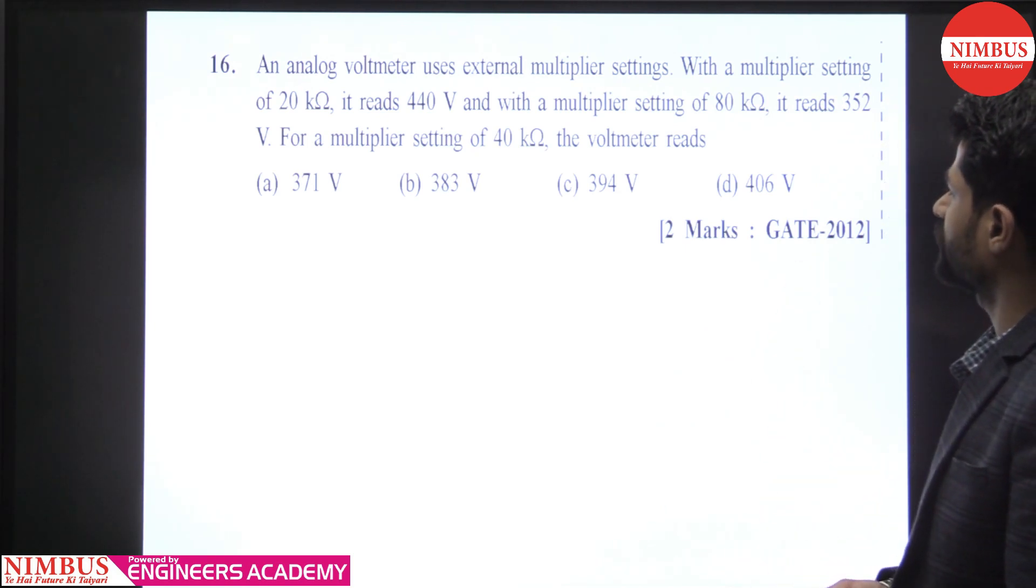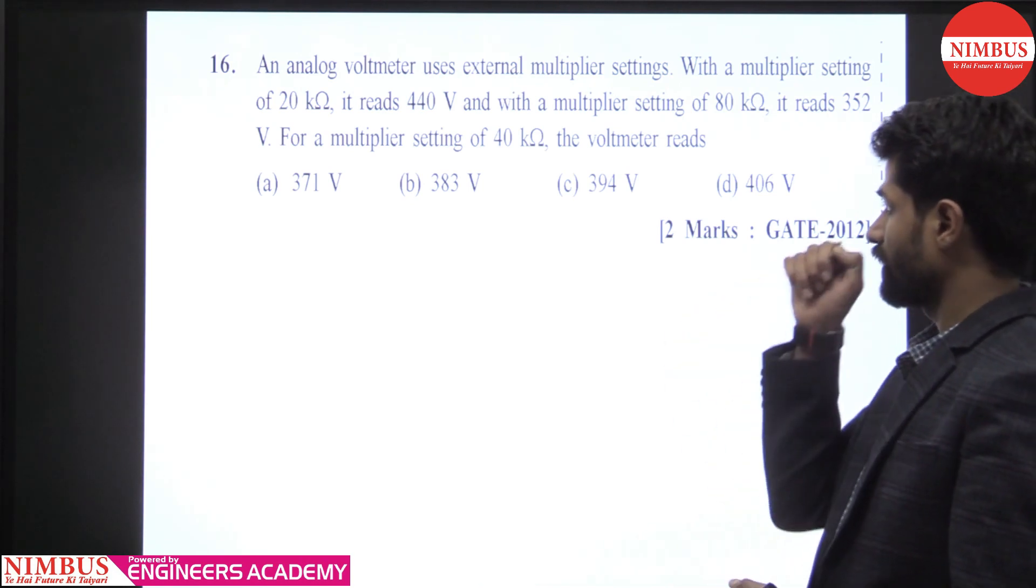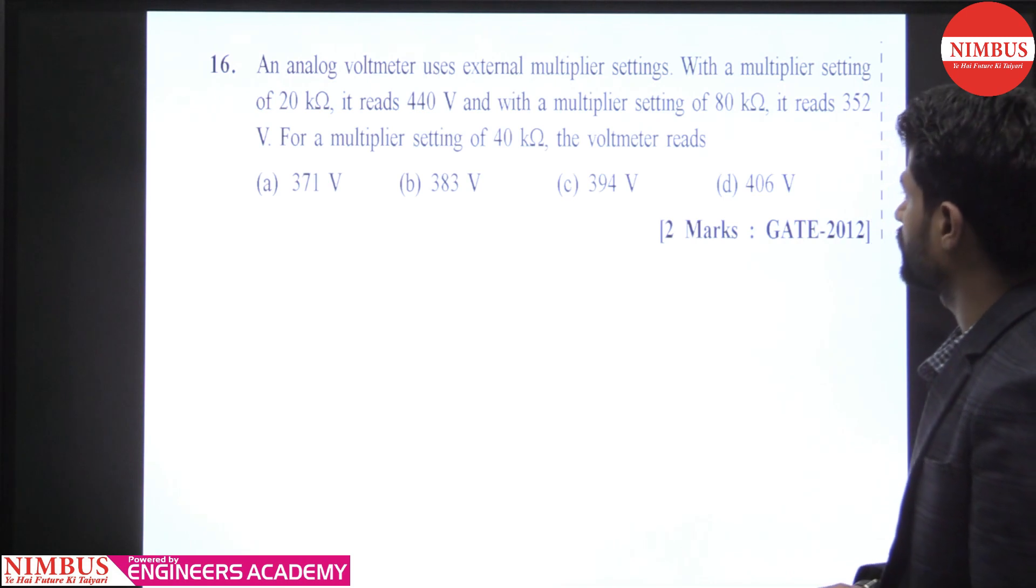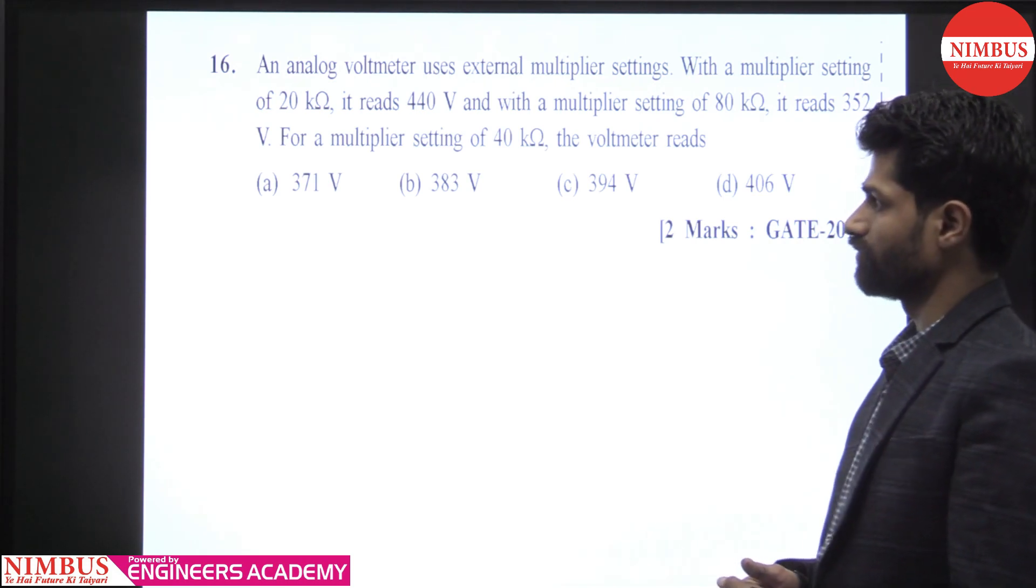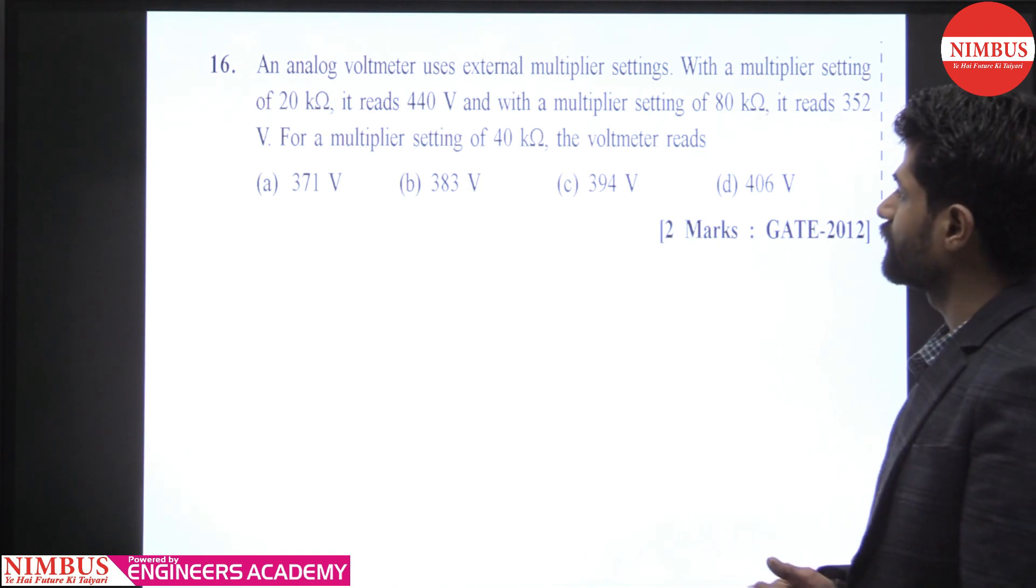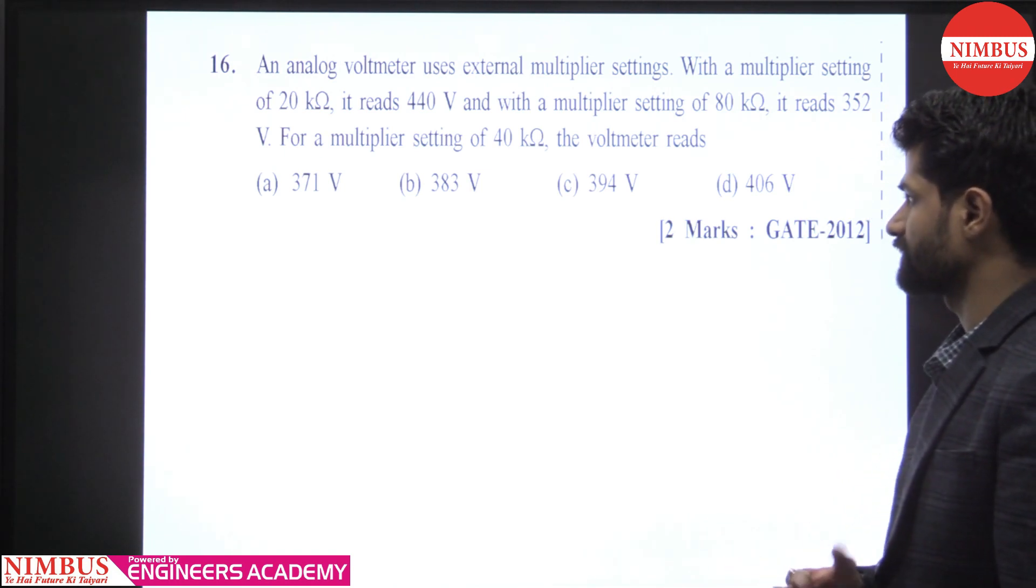An analog voltmeter uses external multiplier setting. With a multiplier setting of 20 kilo ohm, it reads 440 volt. With a multiplier setting of 80 kilo ohm, it reads 352 volt. For a multiplier setting of 40 kilo ohm, the voltmeter reads - right.